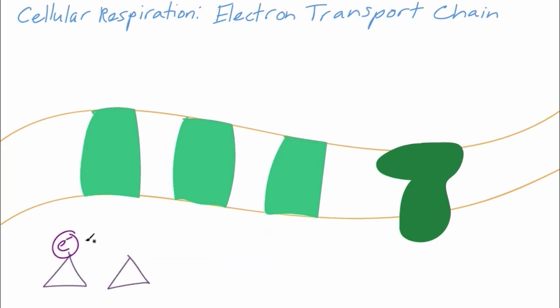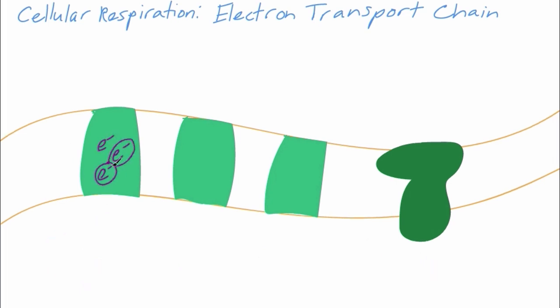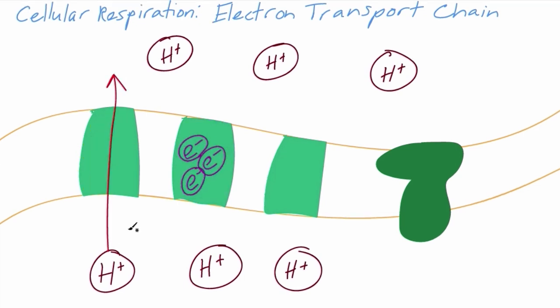The electron-carrying molecules created in the citric acid cycle release their electrons into the membrane. As the electrons move along the membrane, they release some of their energy to transport proteins in the membrane. The energy released by the electrons powers these transport proteins, allowing them to pump hydrogen ions to the other side of the membrane.